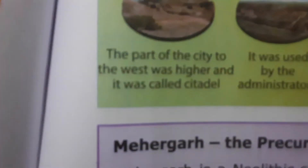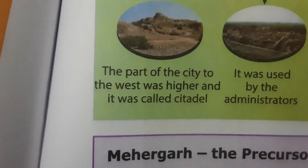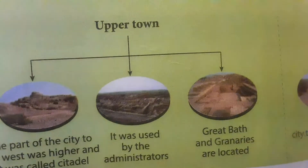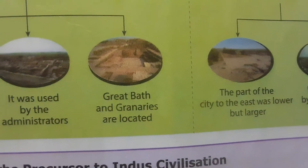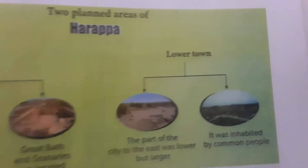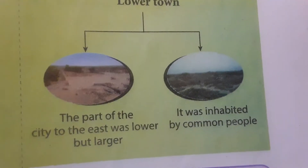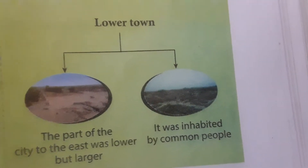Some key Harappan information: the part of the city to the west was higher and it was called the citadel - it was used by administrators. The upper town had the Great Bath and granaries. The lower town, to the east, was lower but larger and was inhabited by common people.